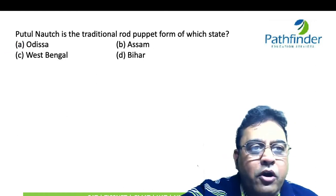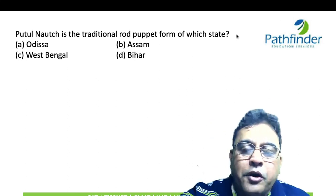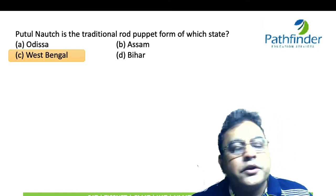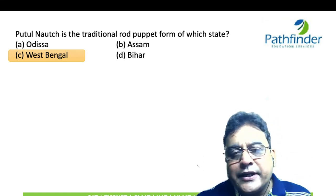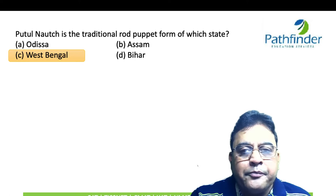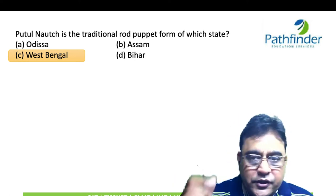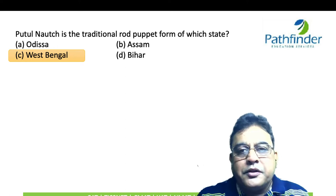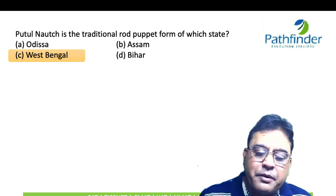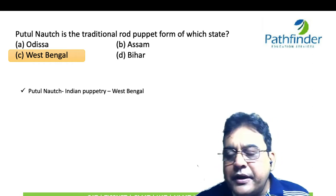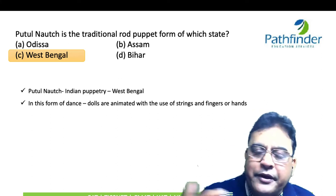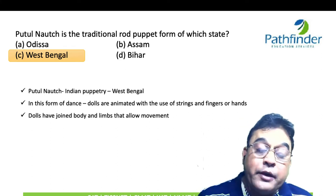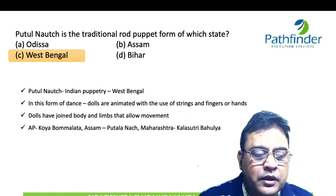Next question: Putul Nach is a traditional rod puppet form of which state? The correct answer is West Bengal — the name itself gives it away. In this form, one Sutradhar or central character moves the puppets with fingers and strings and narrates a story. Dolls are animated — brought to life — with the use of strings, fingers, or hands, and the dolls have joined bodies and limbs that allow movement.